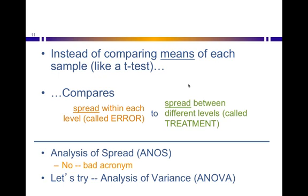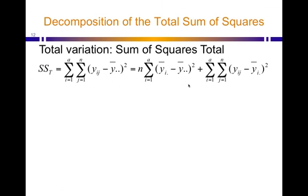All right, well so far we know how to calculate the sum of squares for error. We haven't figured out how to calculate the sum of squares for the treatment. So let's go in and see how ANOVA does this.